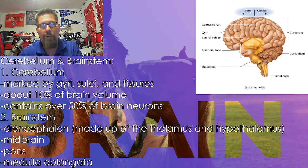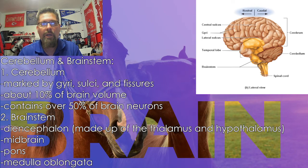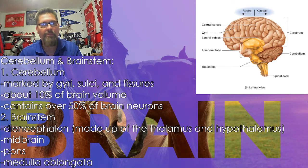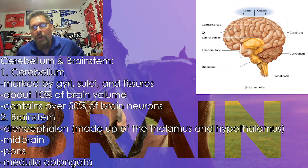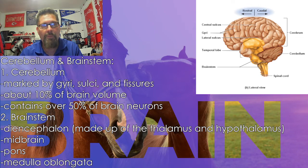An important structure to mention is the diencephalon, a larger area that contains the thalamus and the hypothalamus. These two play a huge role in how the body adapts and makes changes. The brain sends out the messages, but the action is carried out by the hypothalamus, the thalamus, and the pituitary gland.